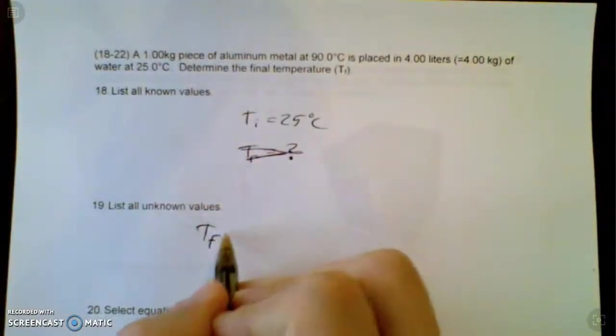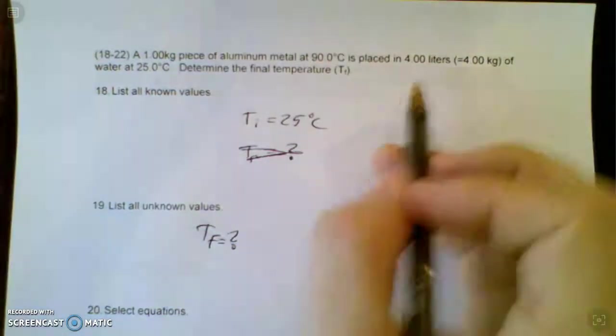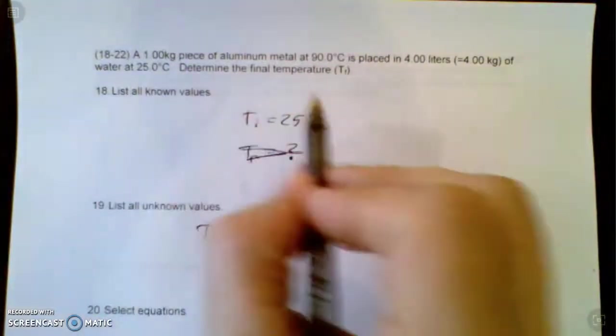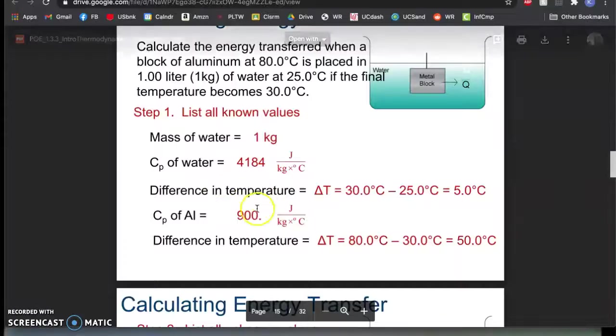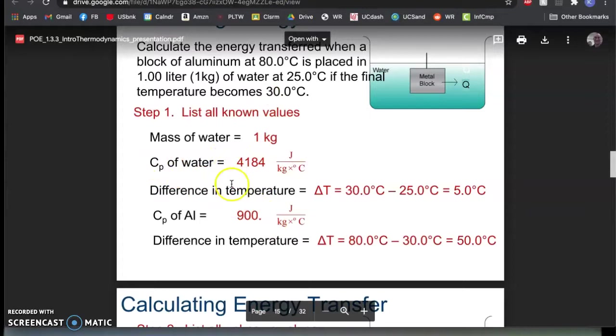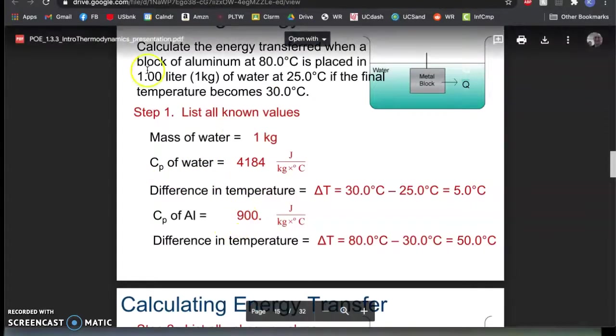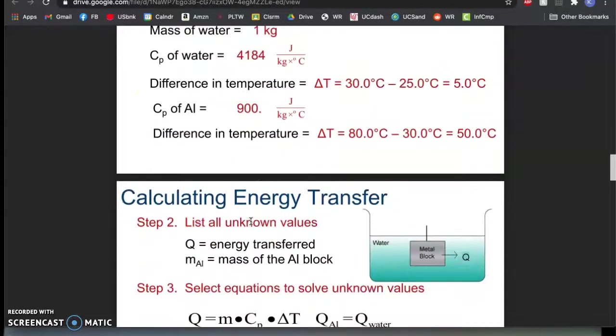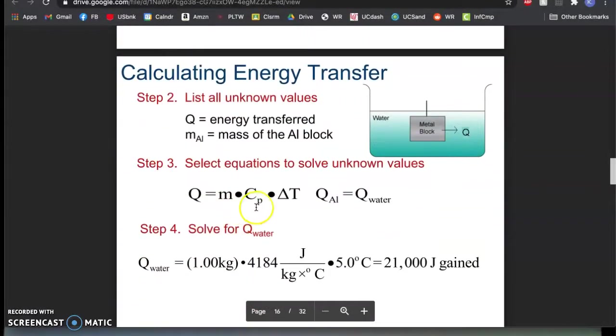You know the temperature initial is 25 degrees Celsius. Temperature final is what you're looking for. You know all sorts of other stuff: kilograms of water, kilograms of metal. You're gonna have to look up the specific heat capacities, but if you look here you can find that right here, of water and aluminum. You can use those numbers.